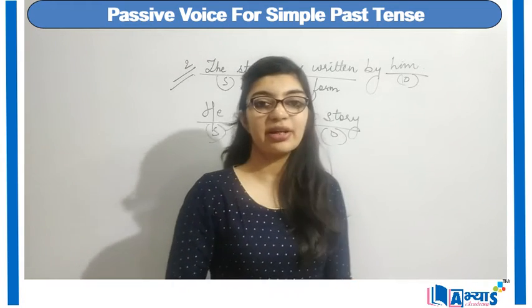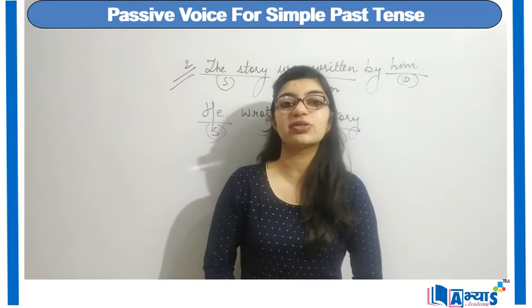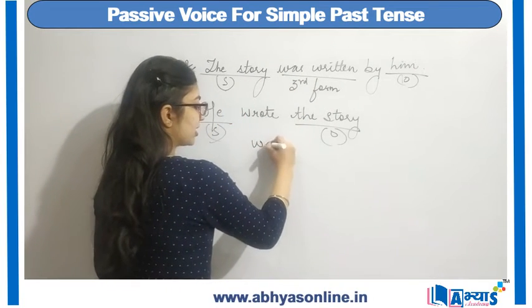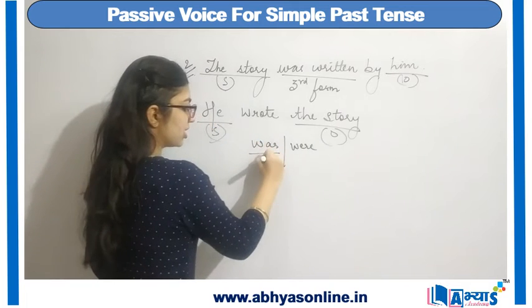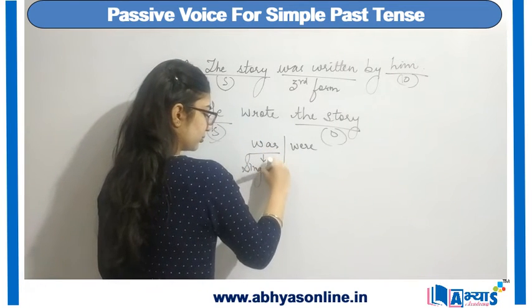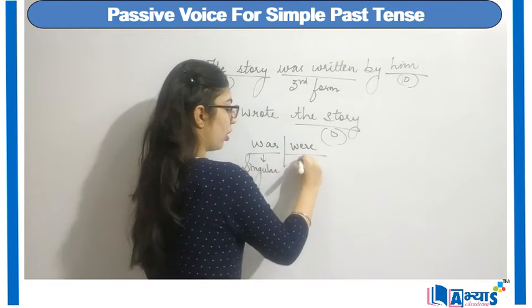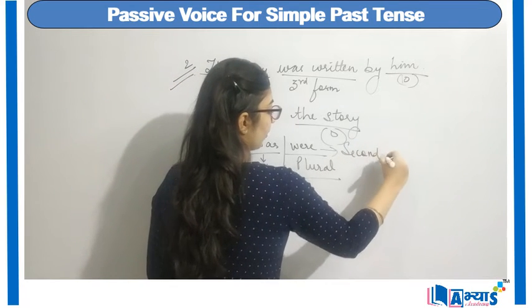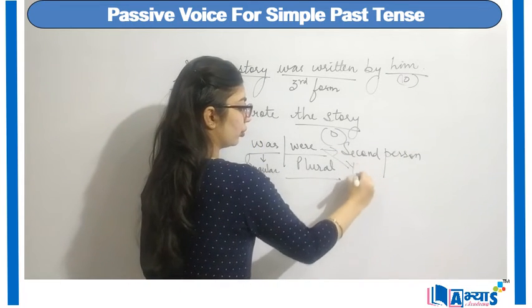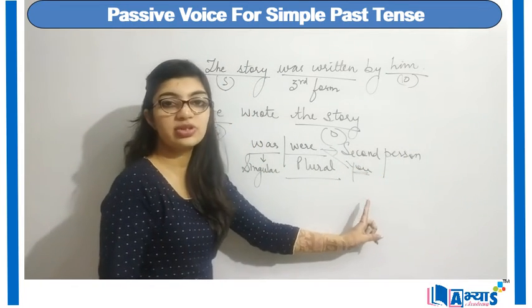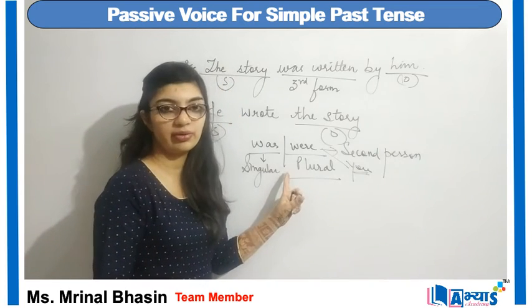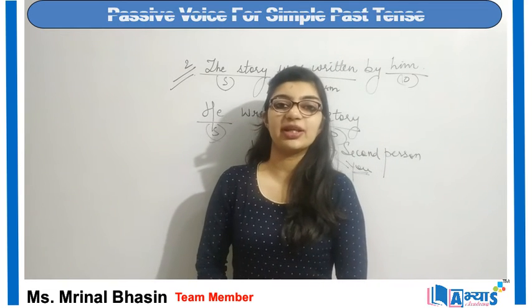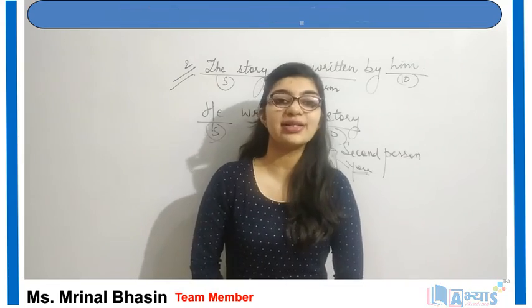In this video we studied the conversion of passive voice to active voice with simple past tense. We also discussed the usage of 'was' and 'were': 'was' is used for singular nouns or pronouns, and 'were' is used for plural. 'Were' is also used for the second person — for example, 'you were.' We then practiced sentences using was and were to understand the concept better.